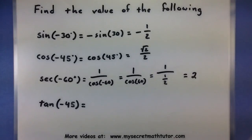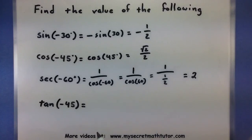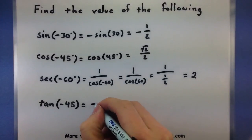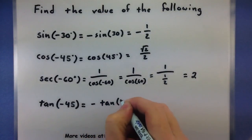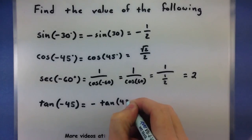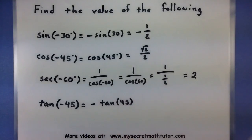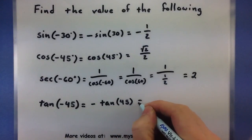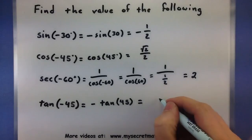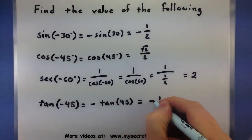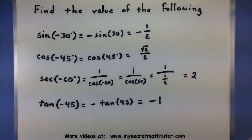One last one — tangent of negative 45 degrees. This one's a lot like sine; I need to move my negative sign out front. Now just figure out tangent of 45 degrees. Fortunately, that's 1, and of course my negative sign is still there, so the answer is negative 1.